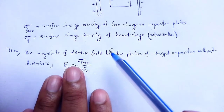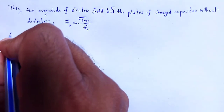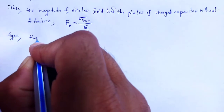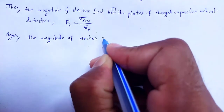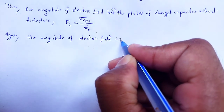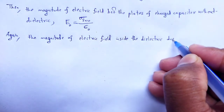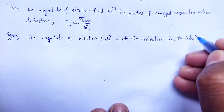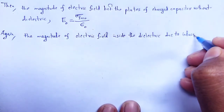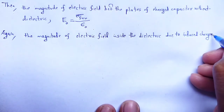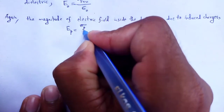Again, the magnitude of electric field intensity between the charged capacitor when the dielectric slab is present: the magnitude of electric field inside the dielectric due to induced charges — due to the phenomenon of polarization, charges are induced — so due to induced charges there will be an electric field, that is E_P, which is equal to sigma_P divided by epsilon naught.